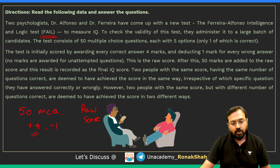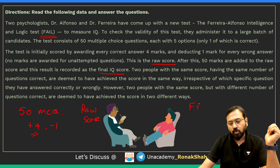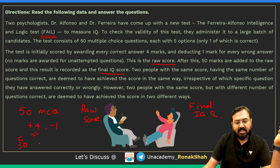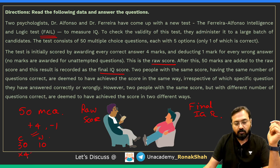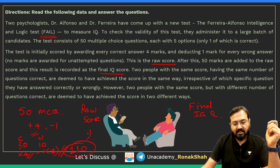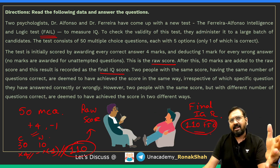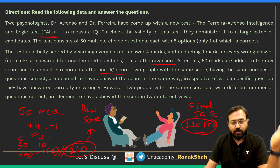There are two concepts here: raw score and final IQ score. Let me quickly help you understand. For example, someone answered 30 questions correctly and 10 questions incorrectly. They'll get 30 × 4 = 120 marks, and 10 marks will be deducted, so the raw score will be 110. Now you just need to add 50 to that to get the final score. You can give a thought about why they are adding 50 marks — post it in the comment section.